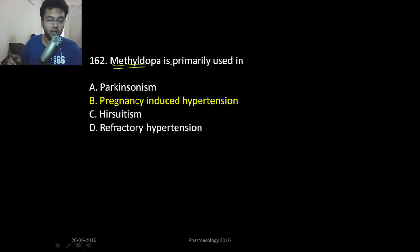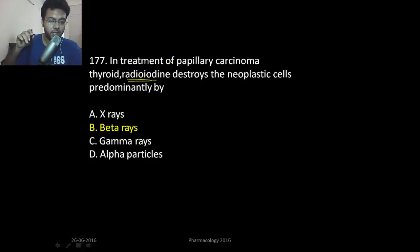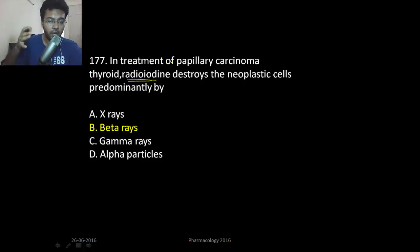This question is about radioactive iodine. The main mechanism by which radioactive iodine works is by emitting beta rays, and these beta rays damage the substance of the thyroid. So there'll be damage to the thyroid and the person will get relief from hyperthyroidism or papillary carcinoma of the thyroid.